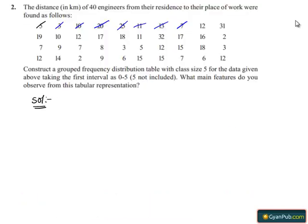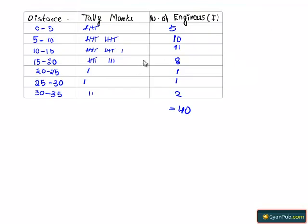They asked us to construct a grouped frequency distribution table with class size 5 and what main features we observe. From the table we observed that the maximum number of engineers are in the third interval, between 10 to 15.